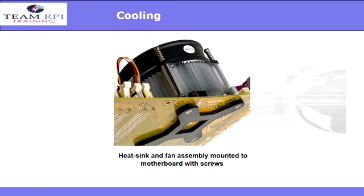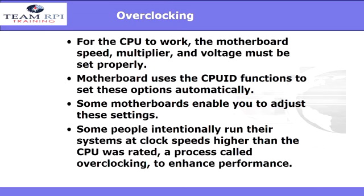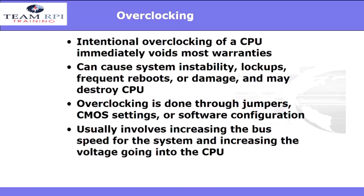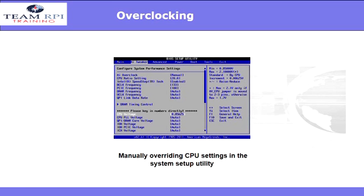Now that you have it all put back together, you have to make sure that the motherboard speed, multiplier, and voltage are all set properly. Some motherboards enable you to adjust these settings, and some people intentionally run their system at clock speeds higher than the CPU is rated. Remember, overclocking can damage the PC; however, if the situation warrants it, you'll do that through jumpers, CMOS settings, or software configuration — usually involves increasing the bus speed and increasing the voltage going into the CPU. Here's a look at how to manually override the CPU settings in the BIOS setup.